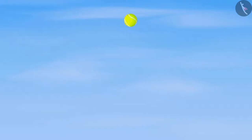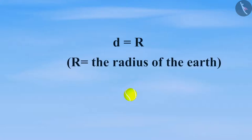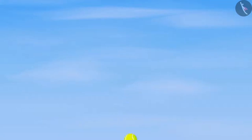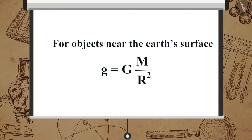Let an object be near the surface of the Earth. Then, the distance d in the previous equation will be equal to R, the radius of the Earth. Therefore, for objects near the Earth's surface, g is equal to G multiplied by M upon R square.